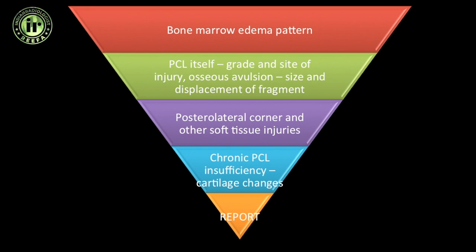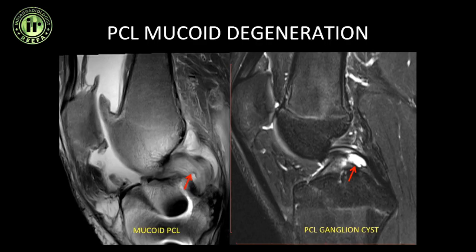The reporting pattern for PCL injuries: first, mention the bone marrow edema pattern; next, describe the PCL itself — the grade and site of injury; in cases of osseous avulsion, mention the size and displacement of fragments. Just like ACL injuries, mention other soft tissue injuries — posterolateral corner injuries are particularly common. In cases of chronic PCL insufficiency, also mention the cartilage status. Covering all of these answers all the orthopedic surgeon's questions.